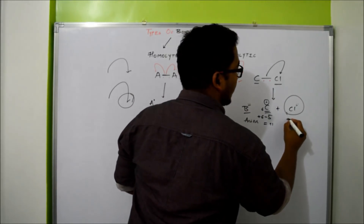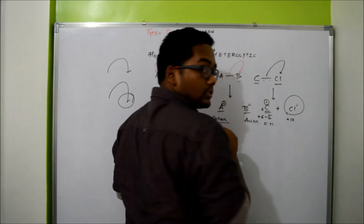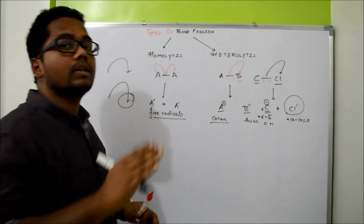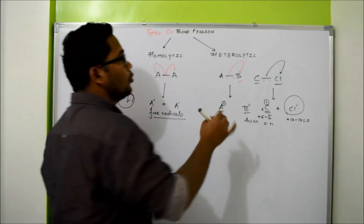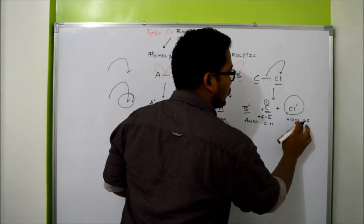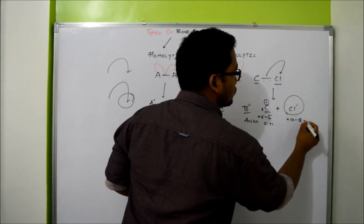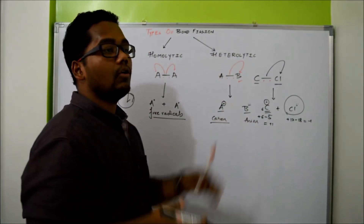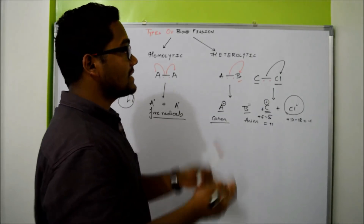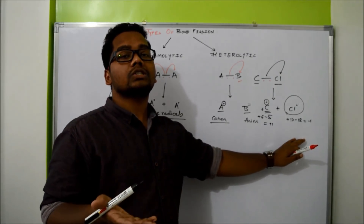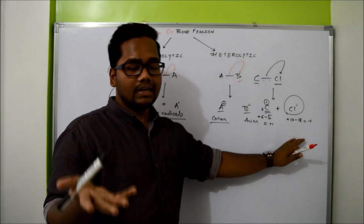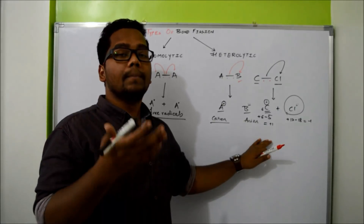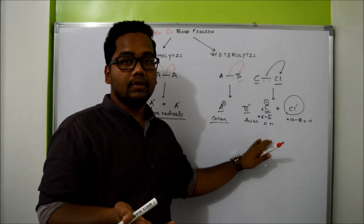If you consider chlorine, for which the atomic number is 17, the number of protons are +17 and number of electrons are -17, giving a total charge of zero for the neutral atom. The moment it takes up one extra electron, the number of electrons moves from 17 to 18, so it acquires a negative charge because it has an excess of electrons. That's the reason why heterolytic bond fission always gives you charge-developed ions — one is a cation and the other is an anion, and the bond breaks in favour of the more electronegative atom.